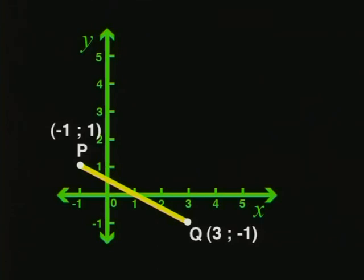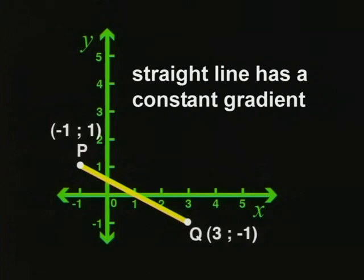The reason a line segment is straight is because the gradient or slope is constant. That means it stays the same.